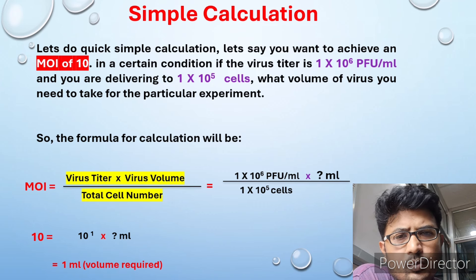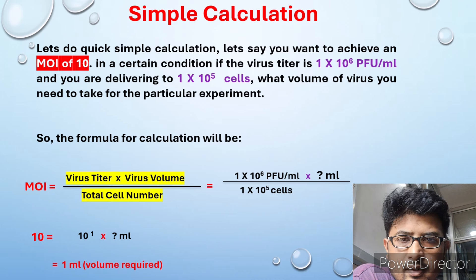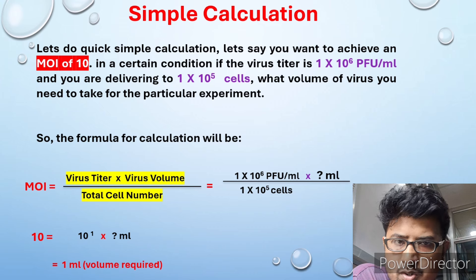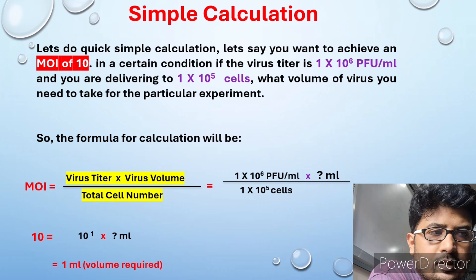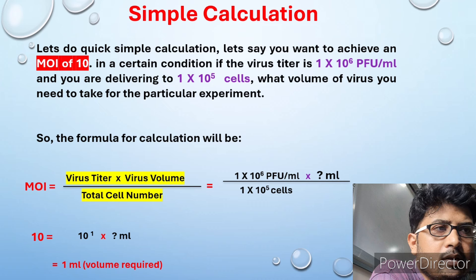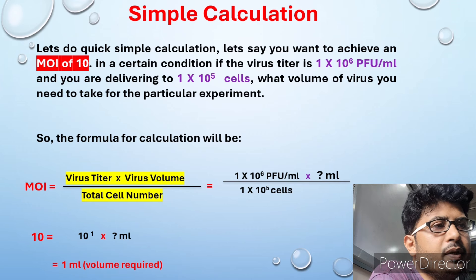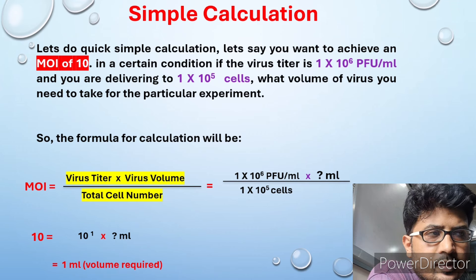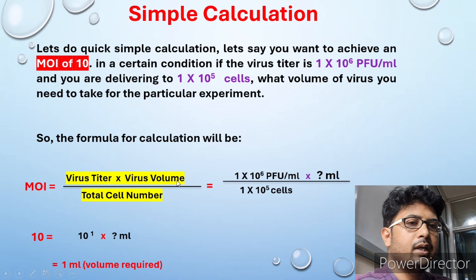Let's do a quick calculation. Say you want to achieve an MOI of 10. You have a stock of the virus in a liquid solution or buffer, and you know the viral titer is 1×10⁶ PFU per mL. PFU is the plaque forming unit — plaques are formed by the virus on the particular cells from which you have isolated it.